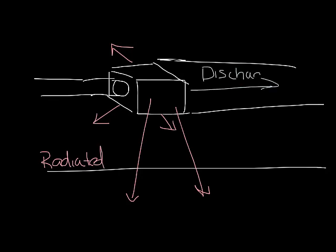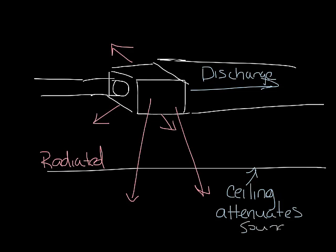The discharge sound just comes out of the discharge of the box and down the ductwork. The only thing that really is available to reduce the radiated sound going into the space is the ceiling tiles. They do a very good job at attenuating radiated sound. Applications with open ceilings can be much louder than ones with ceilings because there's nothing to attenuate the radiated sound.